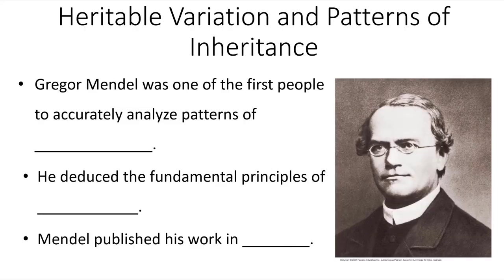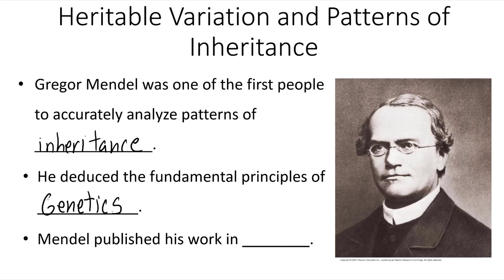An Augustinian monk, Gregor Mendel, was one of the first people to accurately analyze patterns of inheritance. He deduced the fundamental principles of genetics. Gregor Mendel published his work in 1866, and this was actually before the discovery of DNA or chromosomes.